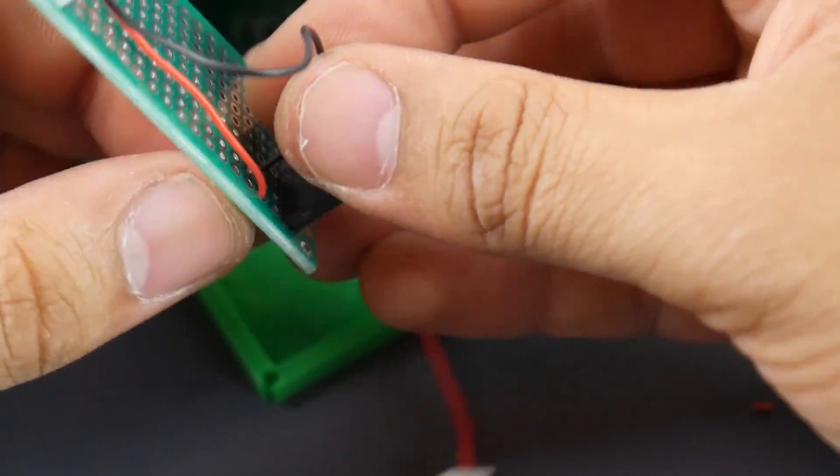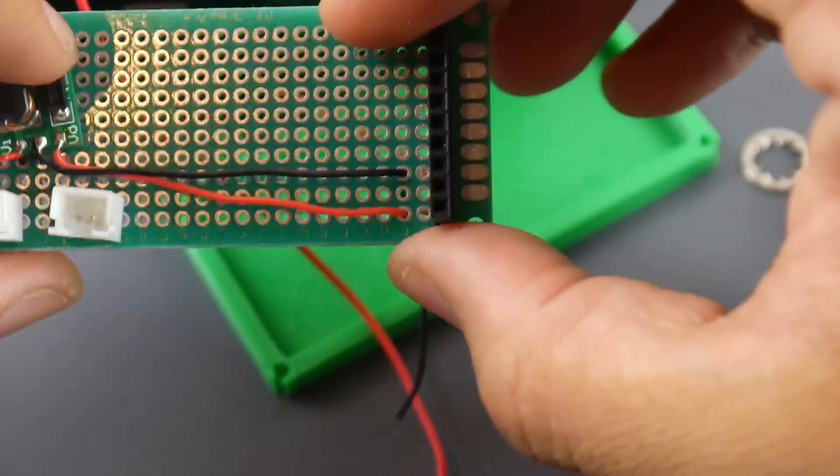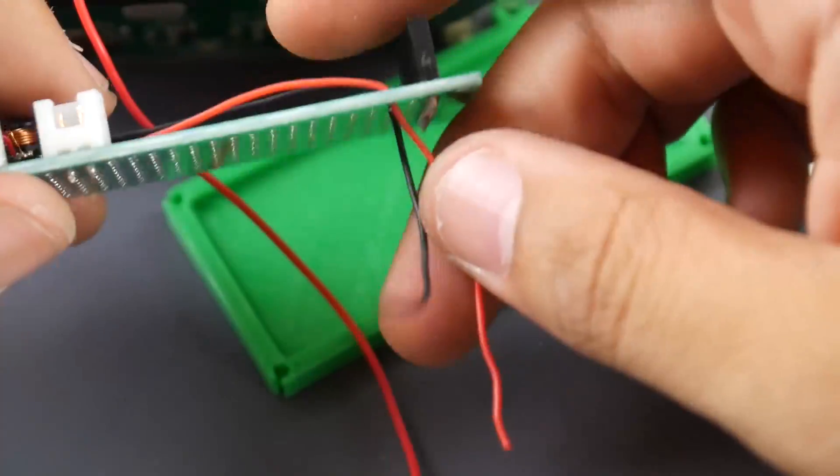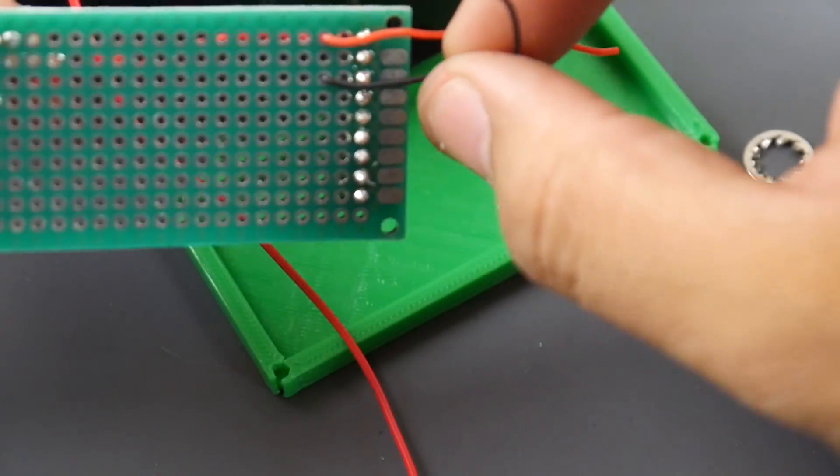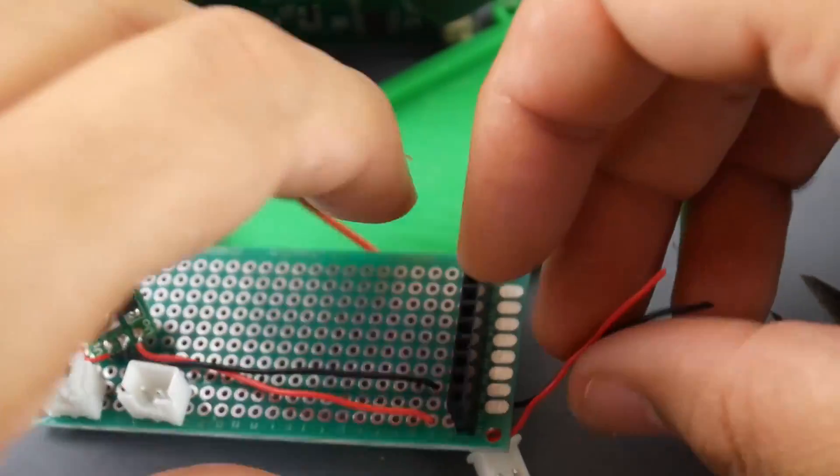Now, the one all the way on the bottom is VCC, which would be the VO, the red wire. And if you go up to the third one, that's going to be ground, which I'll route the black wire to coming out of the step-up converter.